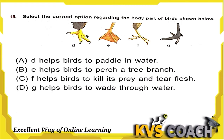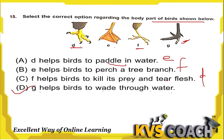Next question: select the correct option regarding the body parts of birds shown. Option D says part D helps the bird paddle in water — no, webbed feet help in water, not D. Option B says part E helps in paddling water — E helps in water paddling. Option C says part F helps the bird perch on a tree branch — which part F helps with perching. Part G helps the bird wade through water — this is the long leg of a crane or flamingo. Option D is the right answer.